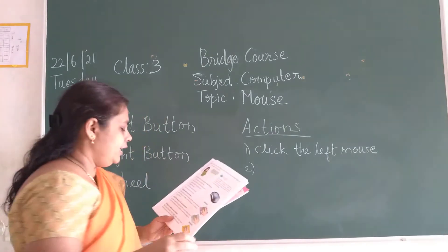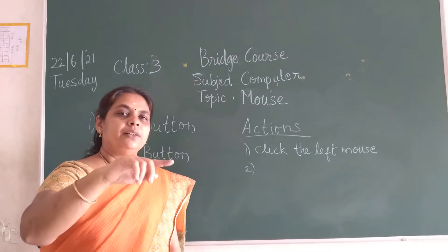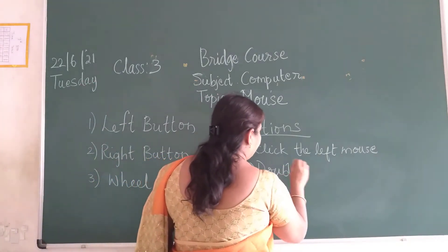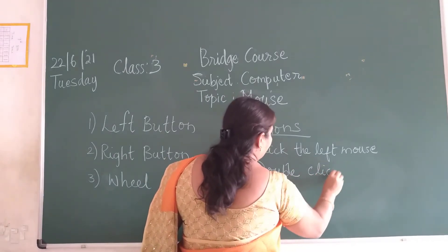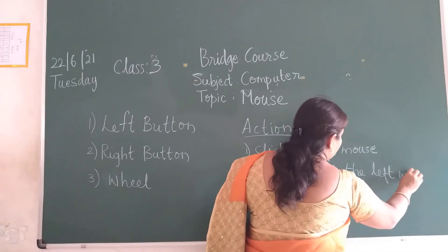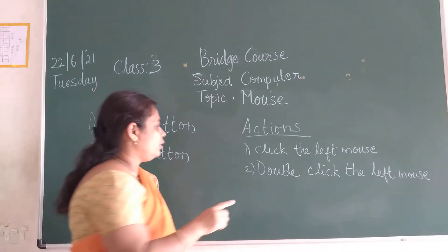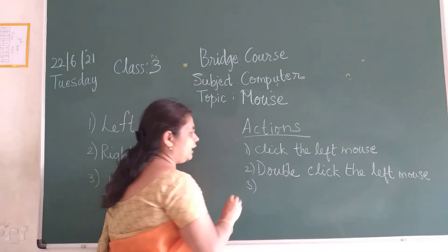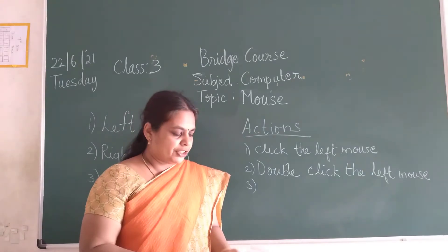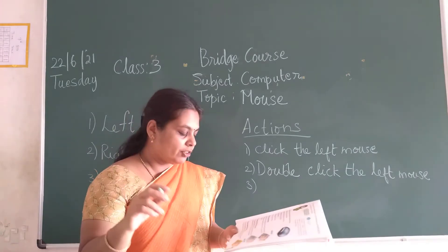The second action is double clicking. You should click two times continuously — that is double click. Double click means it will open the program. Observe the difference children: one is clicking one time, another one is double click. When you double click, the program or any file will get opened children.